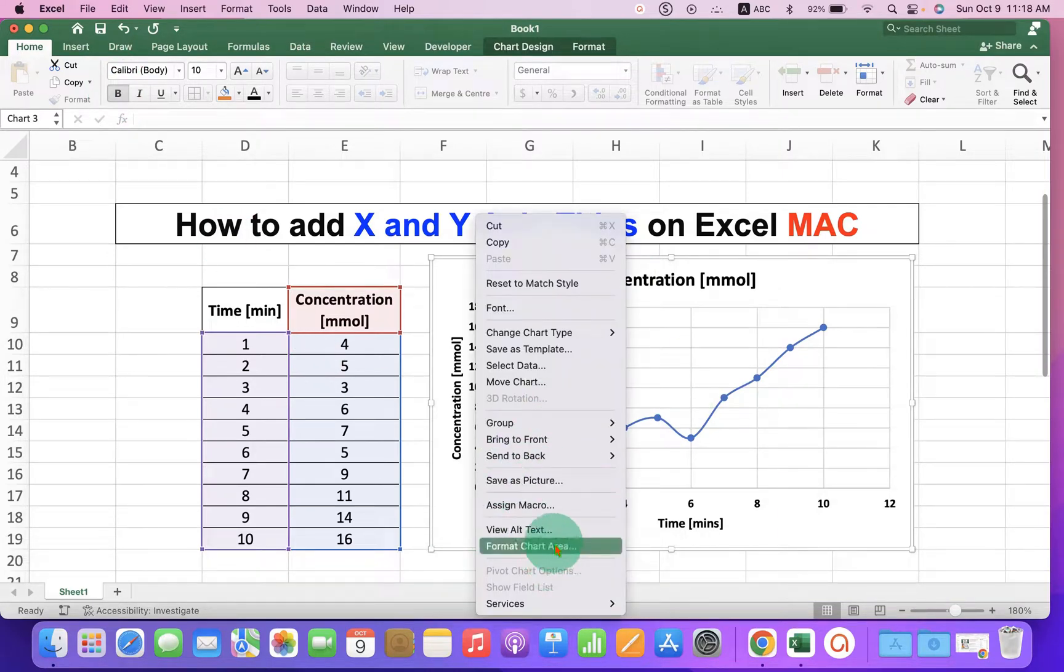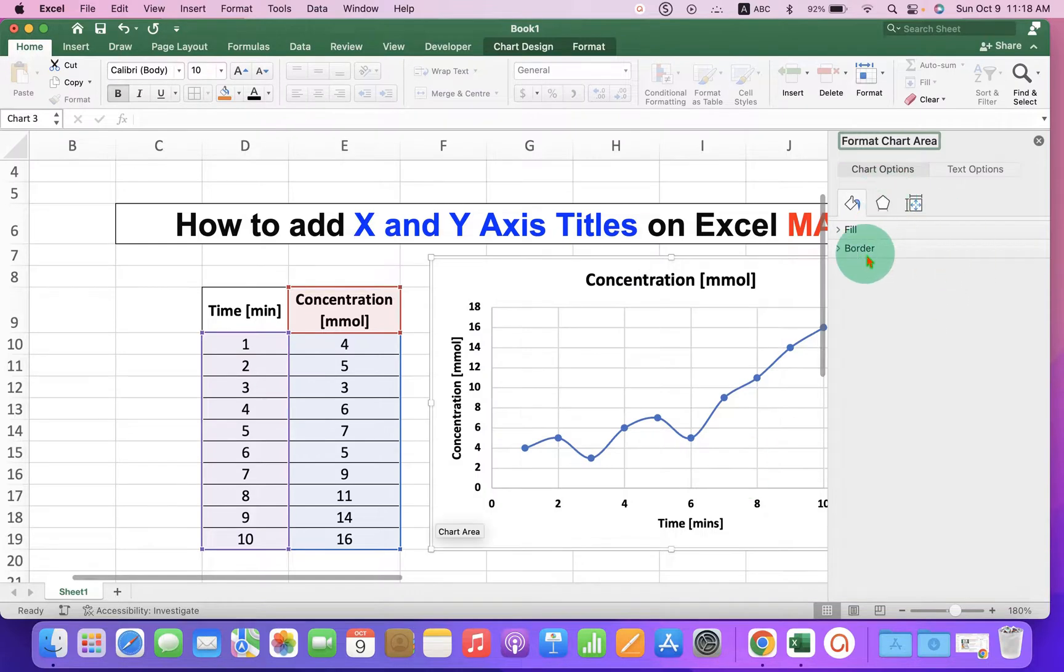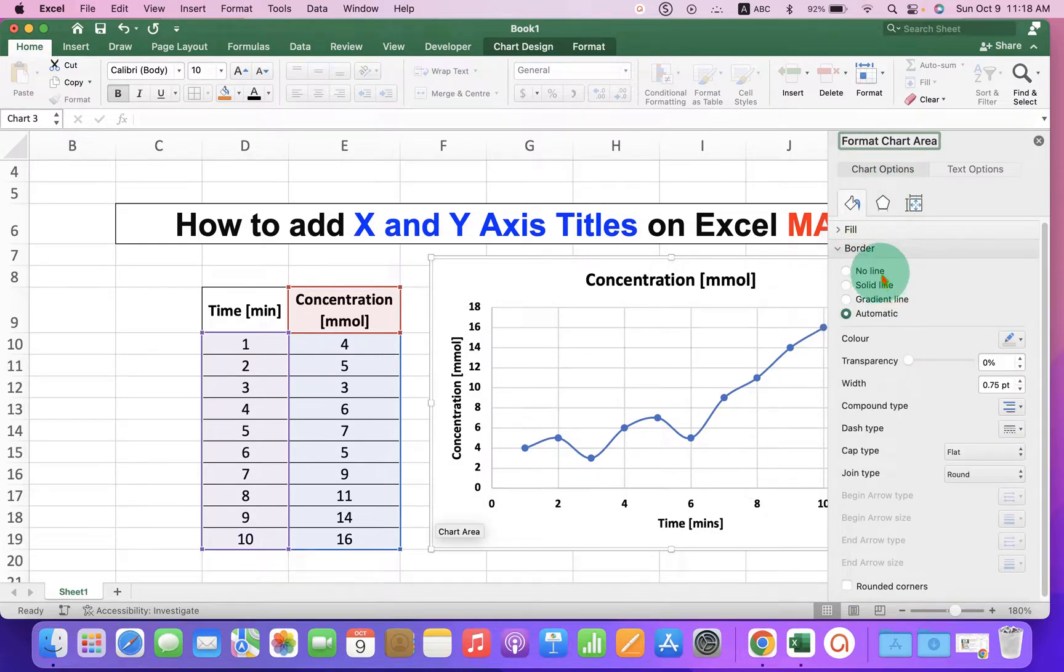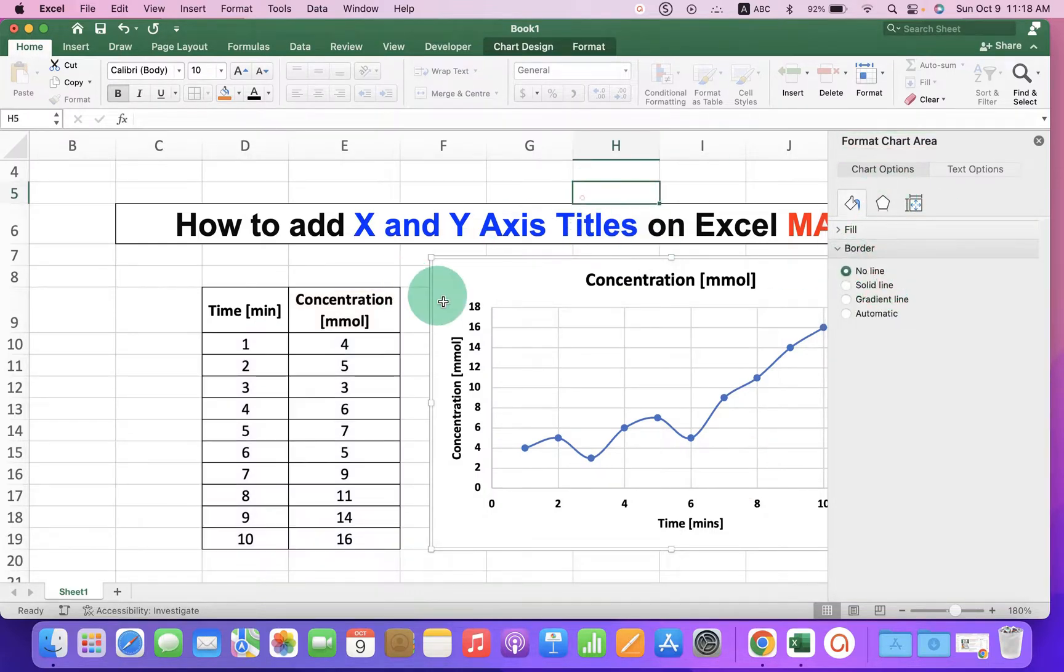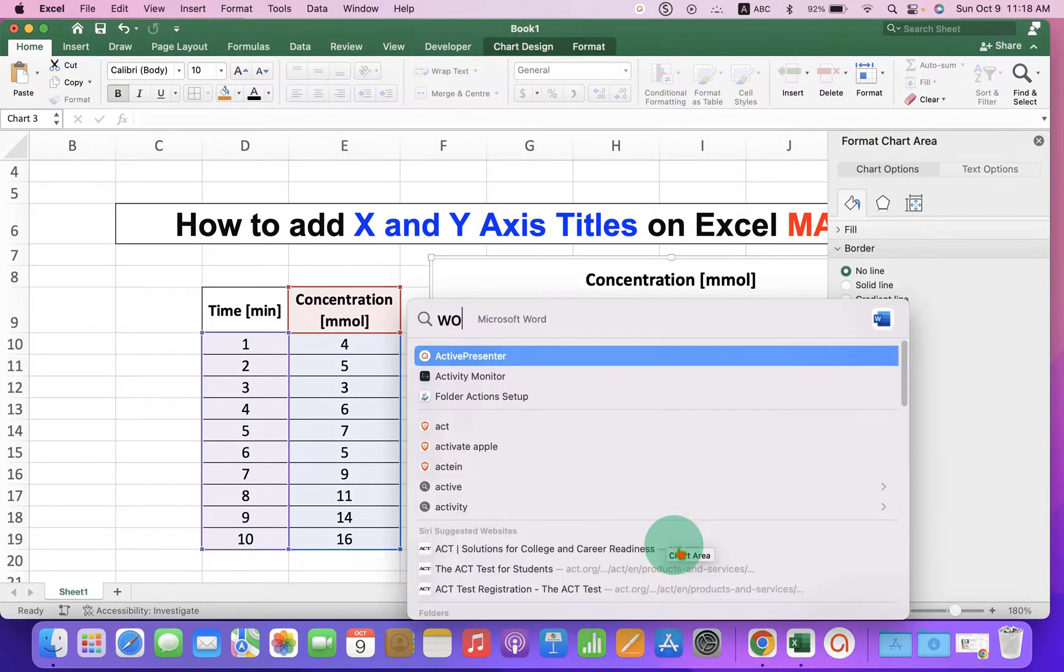And then I also go to the format chart area and under the borders select no line. So the outer border is removed and when we paste this graph into the word document, there is no outer border to the graph.